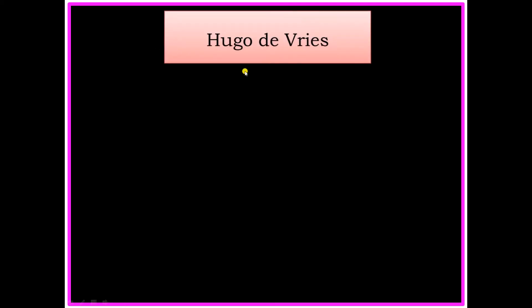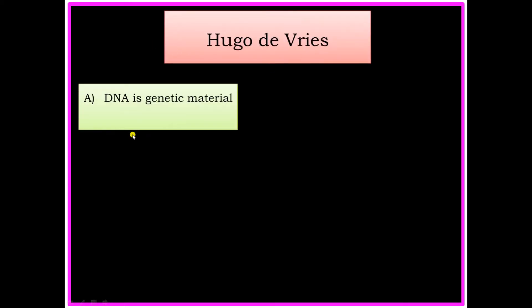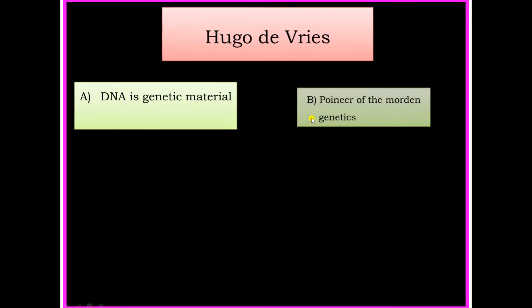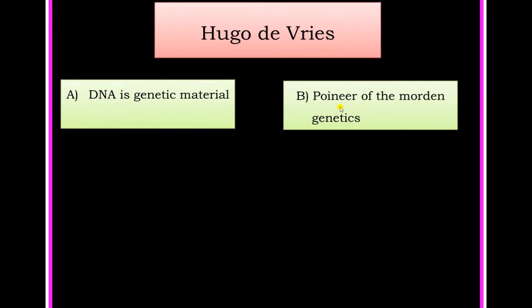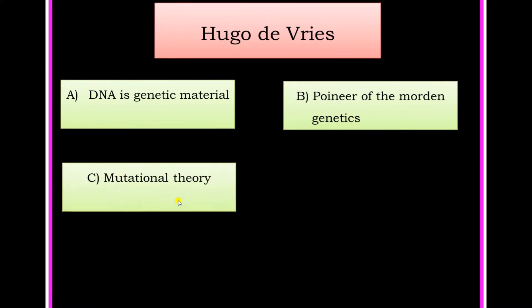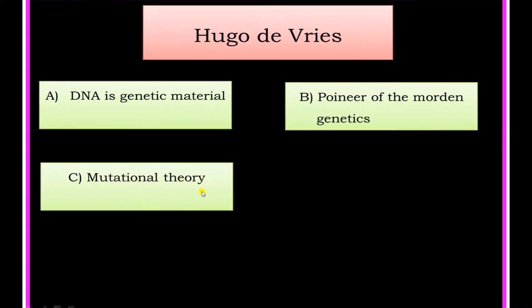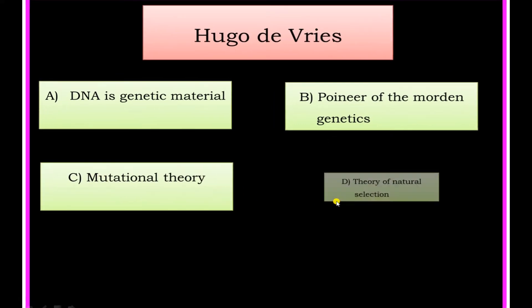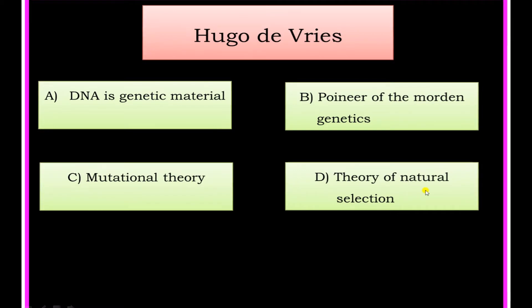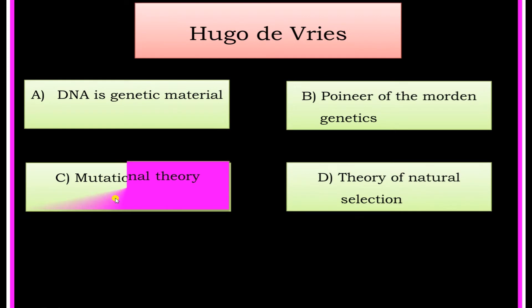Hugo de Vries. Options: A) DNA is genetic material, B) Pioneer of Modern Genetics, C) Mutational Theory, D) Theory of Natural Selection. The answer is: Mutational Theory.